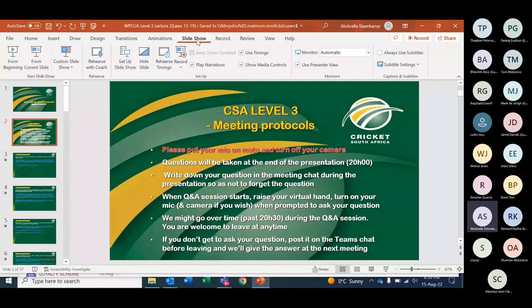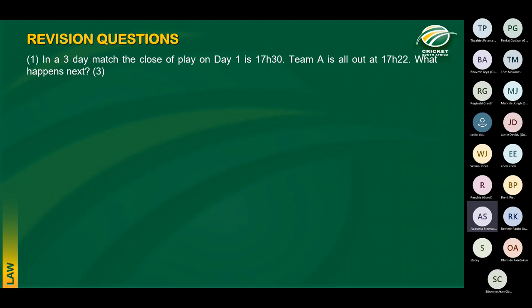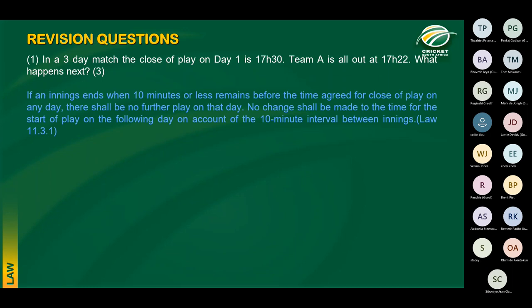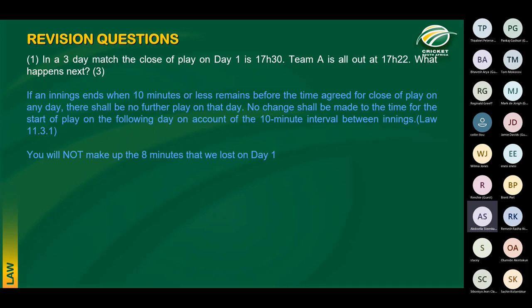To kick off this evening, I will go through the revision questions from last week Wednesday. In a three-day game, close of play is 17:30. Team A holds out at 17:22 — what happens next? The law tells us that if an innings ends 10 minutes or less before close of play, there shall be no further play on that day. Also, if we ended eight minutes early, those eight minutes shall not be made up on the following day.